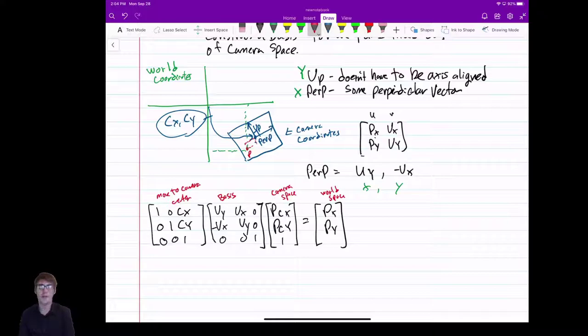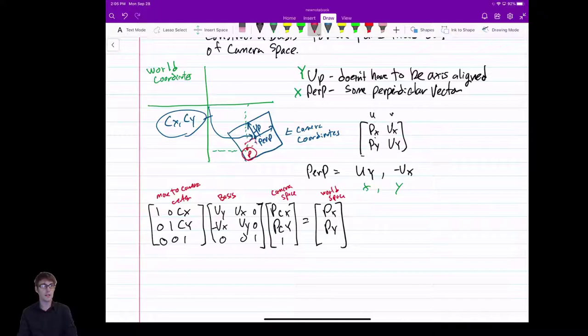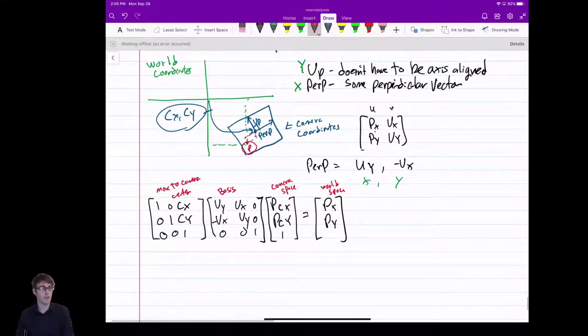So this is my move to camera center. So if I have a world space coordinate, I'm sorry, a camera space coordinate, pcx, pcy, I multiply it by the basis. It converts it to my x and y vectors in world space. I translate it to the center of the camera, and now I'm going to find out those green lines right there. I'm going to find out where p is in world coordinate space. Great. So I can now go from camera space to world space.